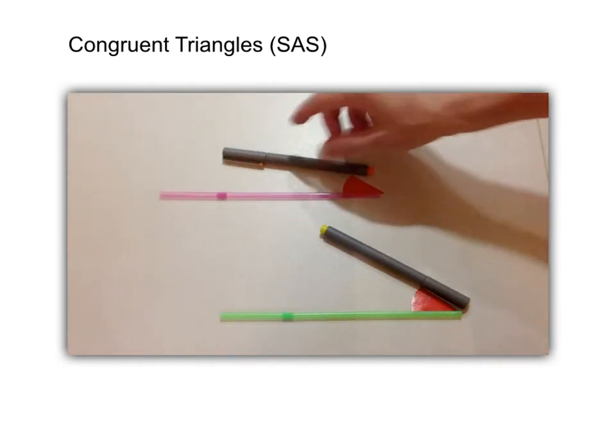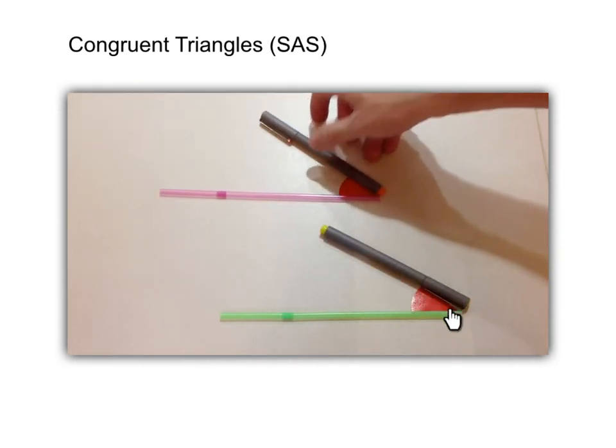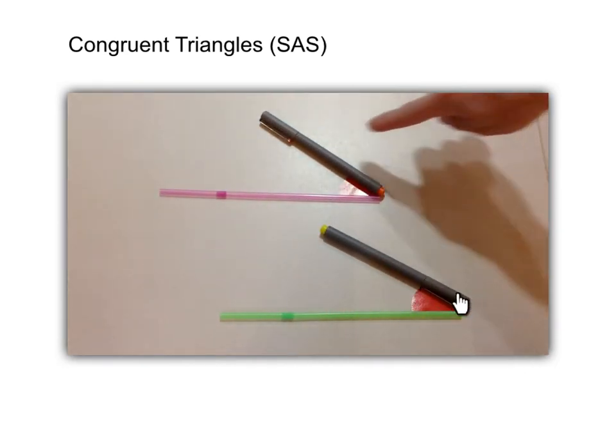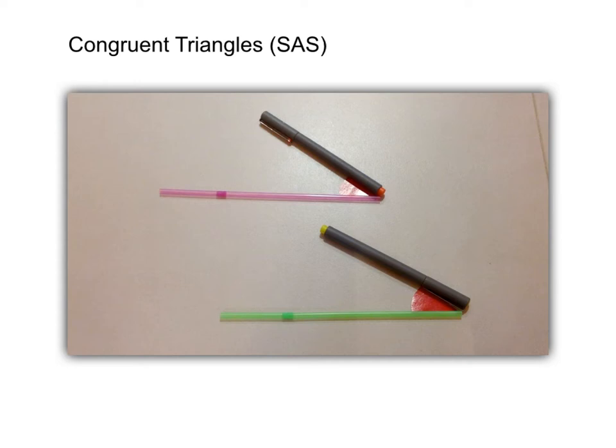Notice that the A, the angle, should be included between the two equal sides so that we have the name SAS. Therefore, we can now write: this is the first S, this is the A, this is the second S.